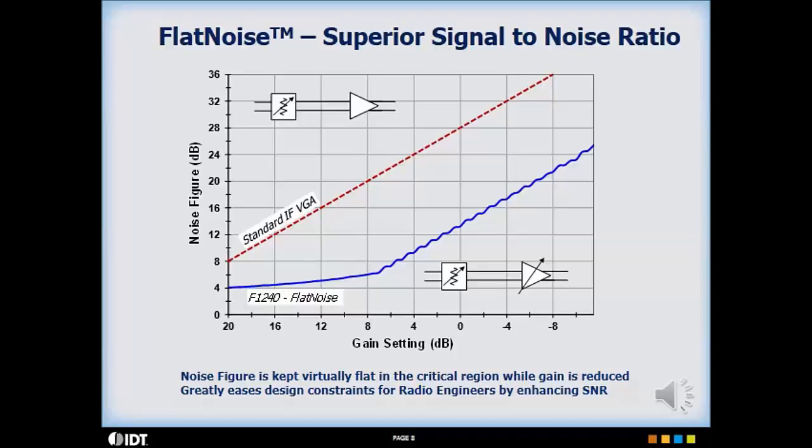This results in improved overall system signal and noise performance when using the F1240 instead of a conventional IF VGA, particularly at the lower gain settings. This technology is being designed into other IDT RF products as well.